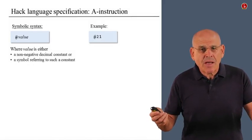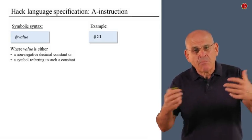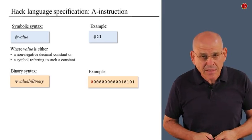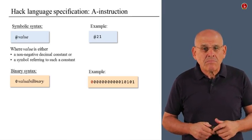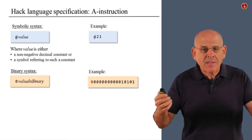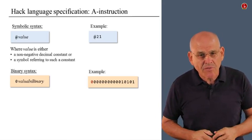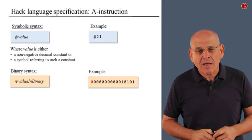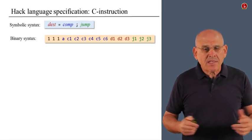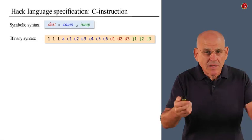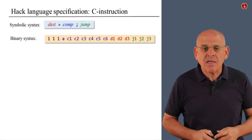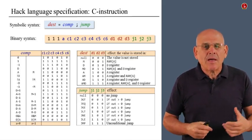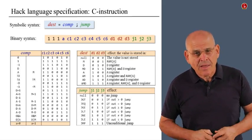The A instruction comes up in its symbolic syntax, and here is the equivalent binary syntax. If you want to translate one to the other, I think it doesn't take too much imagination to figure out how to do it, and in any rate, we are going to say it explicitly down the road. The C instruction in a very similar fashion has a symbolic syntax and a binary syntax, and there's a set of tables that describe the mapping between the former and the latter.